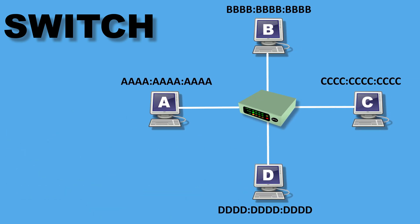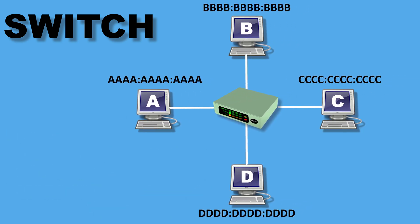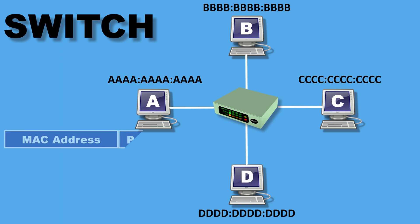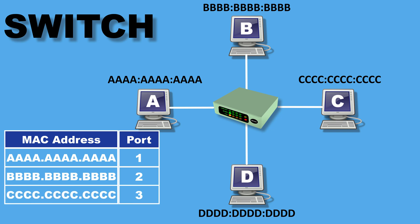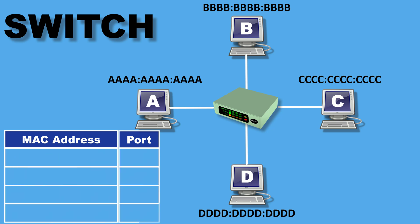Let's take an example with a small network where we have four PCs: PC A, B, C, and D, all connected to a switch. Every switch has something called a MAC address table, or CAM table. This table stores the MAC addresses of each device and on which switch port it is connected. To understand how a switch works, we always start with an empty MAC table. I will show you how the switch learns the connected PCs' MAC addresses and their relevant ports.